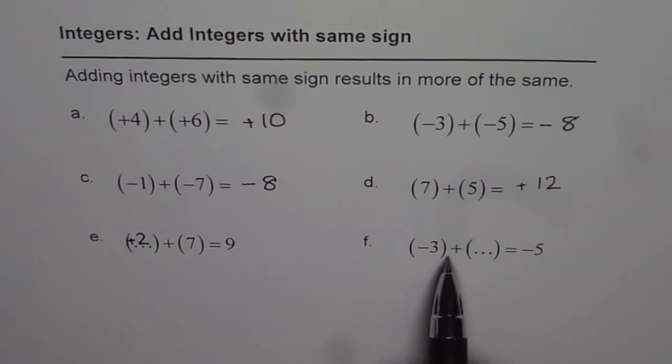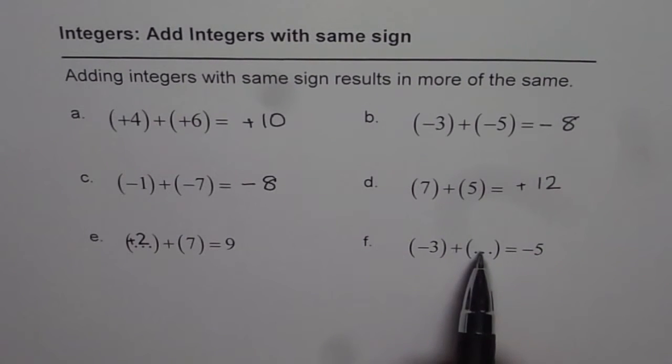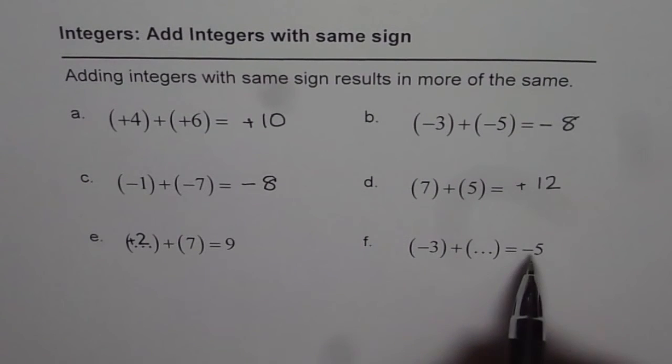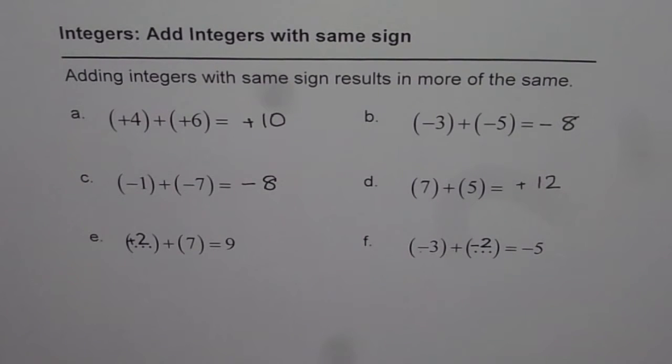The last one is minus 3 plus what is minus 5. More of the same. Negative, negative. We have to add a negative integer. So 3 plus what is 5, that is 2. But with a negative sign. So negative 2 will be added to negative 3 to get minus 5.